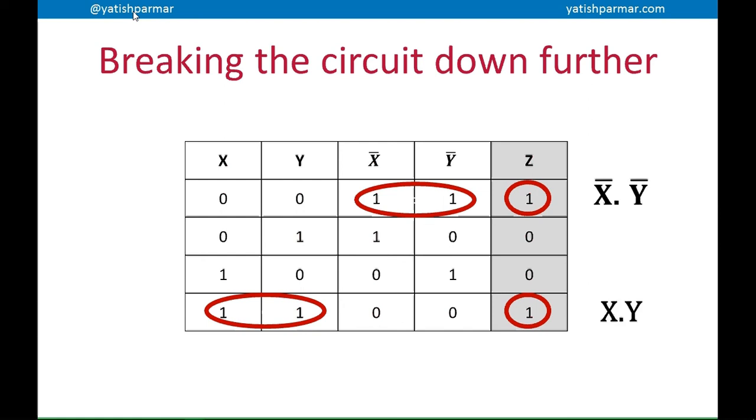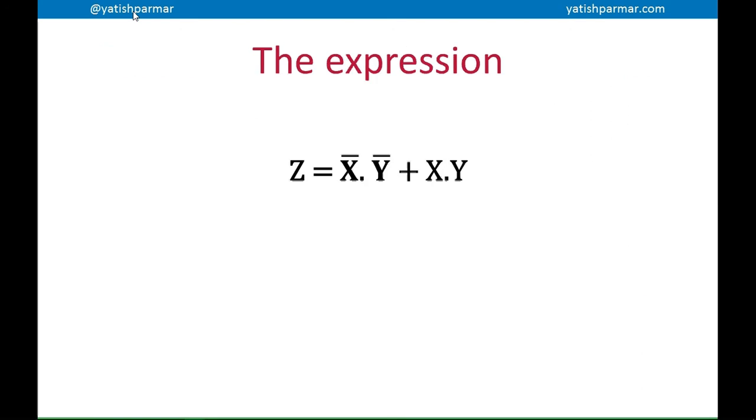So basically, I can simplify that down to say that NOT X and NOT Y and X and Y, they're the two expressions that we're interested in. So once we've identified those two individual expressions, we can join them together in order to create our complete expression for the circuit. So I can say that Z equals NOT X, NOT Y, or X and Y. And that matches up with that truth table that we saw earlier.